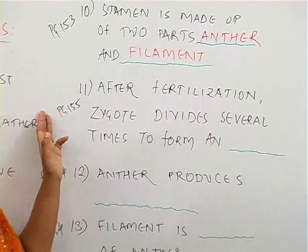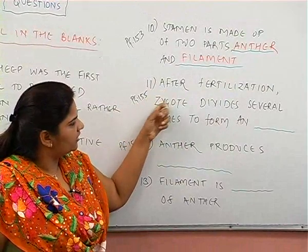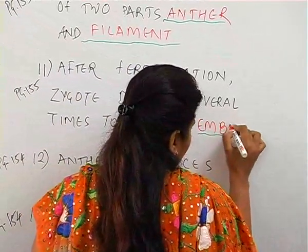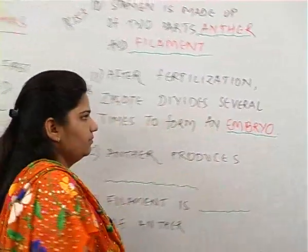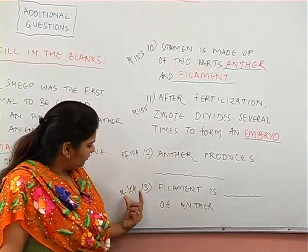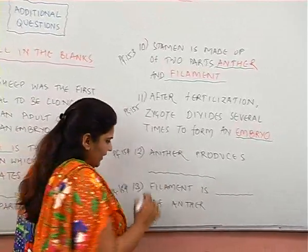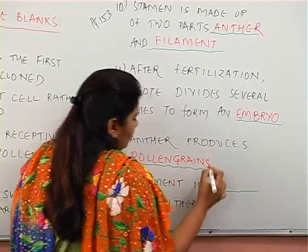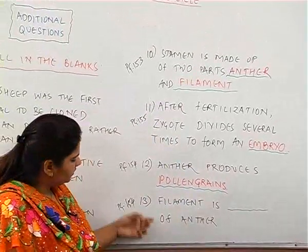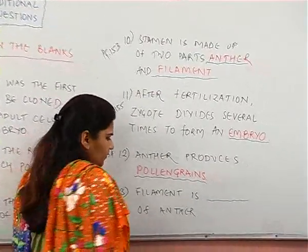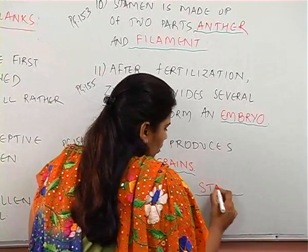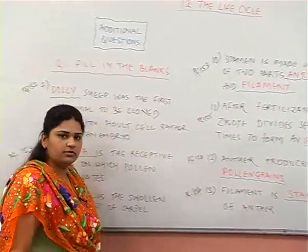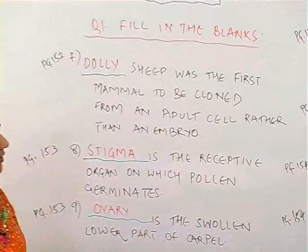Stamen is made up of two parts: anther and filament. The eleventh question on page 155: after fertilization, zygote divides several times to form an embryo. The twelfth question from page 154: anther produces pollen grains. The thirteenth question: filament is the stalk (S-T-A-L-K) of the anther.